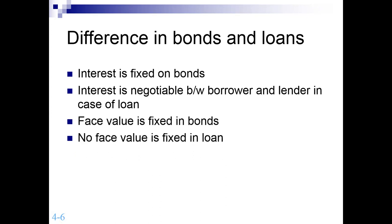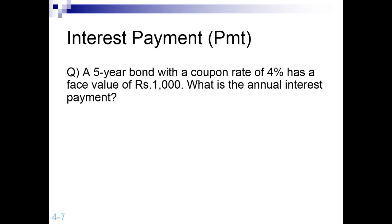This first question gives you an idea of how the bond market functions and how interest payment works. Consider a five-year bond with a coupon rate of 4% and a face value of 1,000. You can use any currency, but the face value will remain 1,000 — this is a standard assumption whether you are working on a basic or advanced question. Whenever we discuss face value or par value, it remains 1,000.